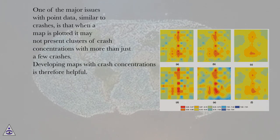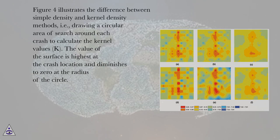One of the major issues with point data, similar to crashes, is that when a map is plotted it may not present clusters of crash concentrations with more than just a few crashes. Developing maps with crash concentrations is therefore helpful. Figure 4 illustrates the difference between simple density and kernel density methods.